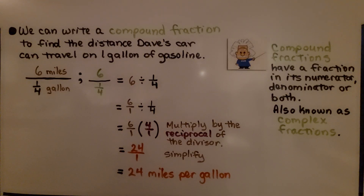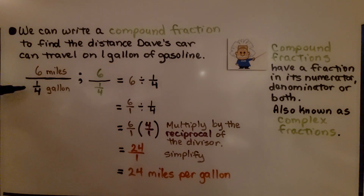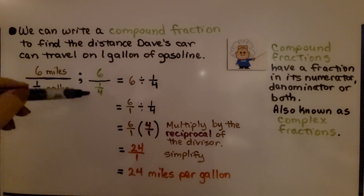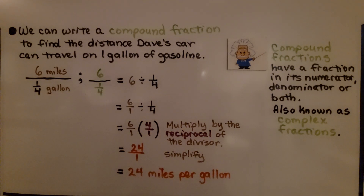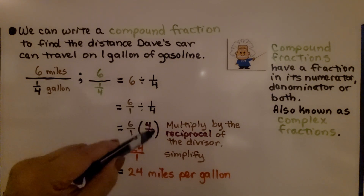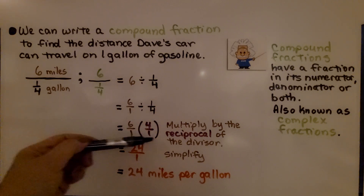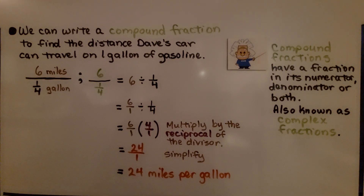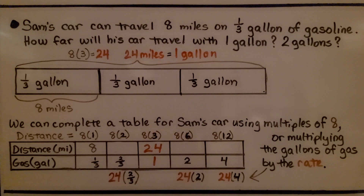We can write a compound fraction to find the distance Dave's car can travel on one gallon of gasoline. Compound fractions — also known as complex fractions — have a fraction in the numerator or denominator or both. We have six miles for one-fourth gallon, written as six over one-fourth. Since fractions are division problems, we write six over one and multiply by the reciprocal of one-fourth, giving us 24 over one, which simplifies to 24 miles per gallon.